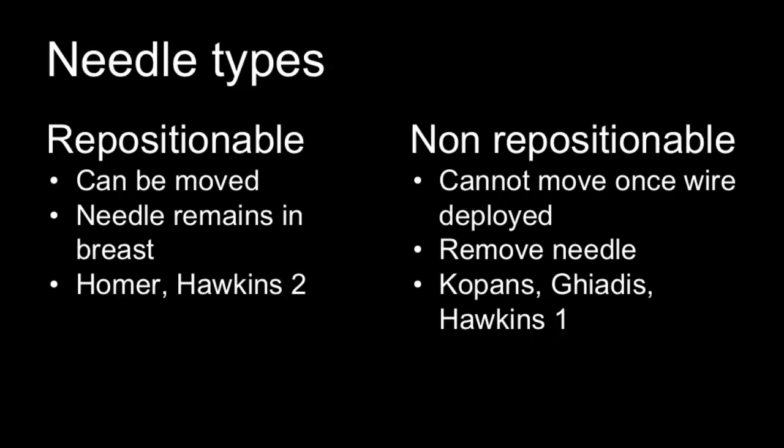There are two main types of needles: repositionable and non-repositionable. Repositionable needles remain within the breast and can be moved once the wire is deployed — examples include Homer and Hawkins II. Non-repositionable needles are removed via needle wire exchange; once the wire is deployed into the breast, it can only be removed by surgery.